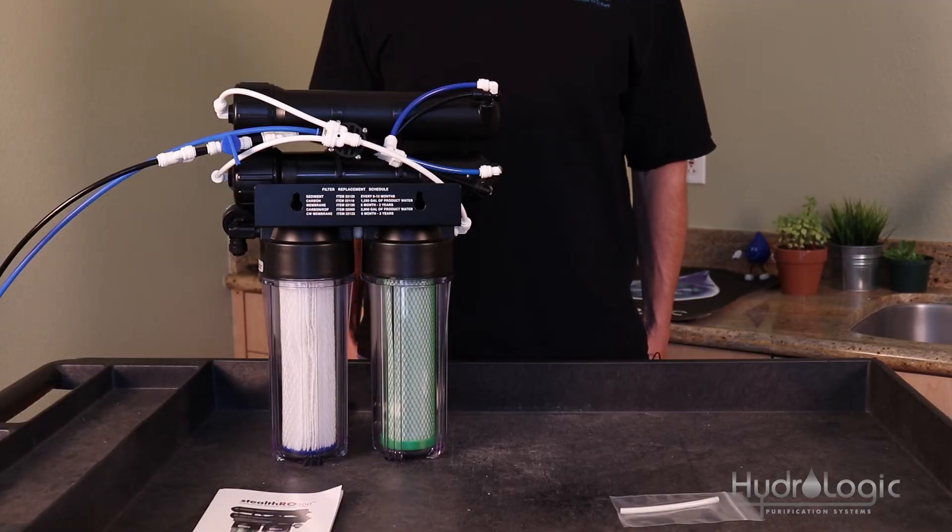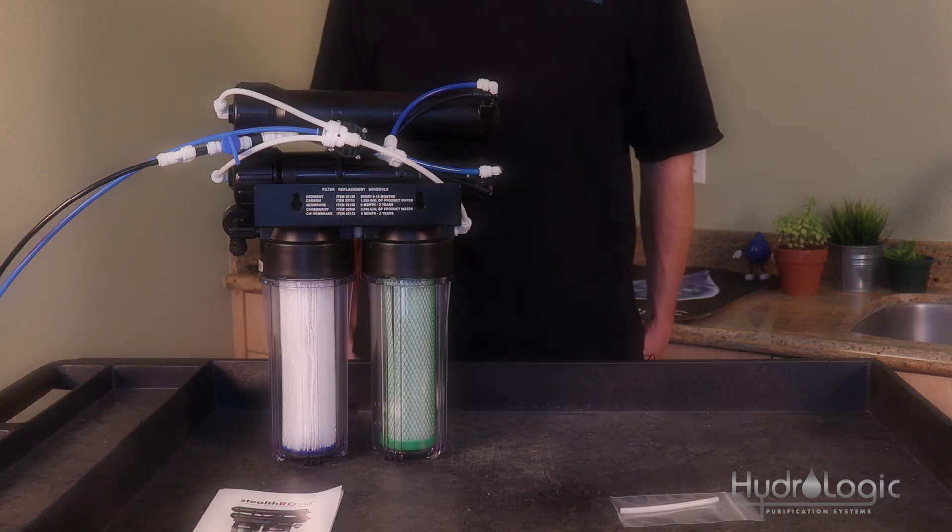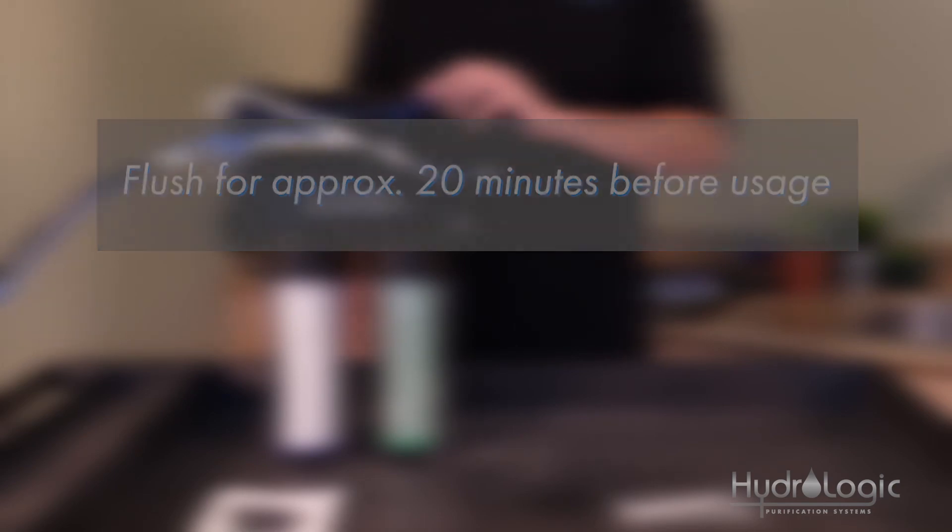You've now successfully converted your Stealth 150 into a Stealth 300. When you turn your water back on, make sure you flush it for about 20 minutes to rinse out the food-grade preservative in your new membrane here.